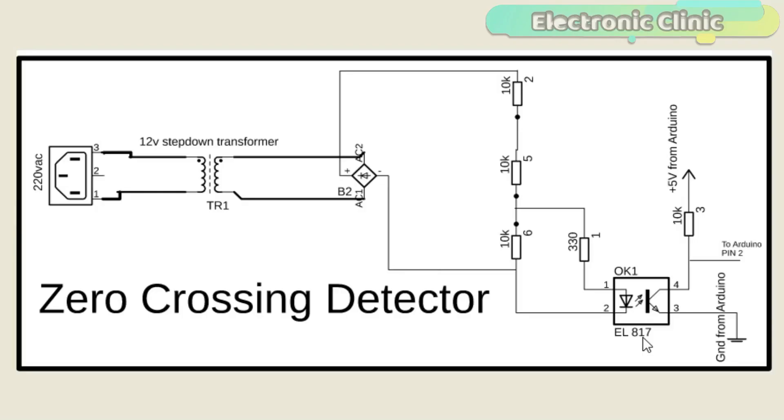This is a current limiting resistor while the cathode of the IR LED is connected with the ground of the bridge rectifier. On the right side of the EL817 a 10K resistor is connected with the collector while the other side of the 10K resistor is connected with the Arduino's 5 volt.